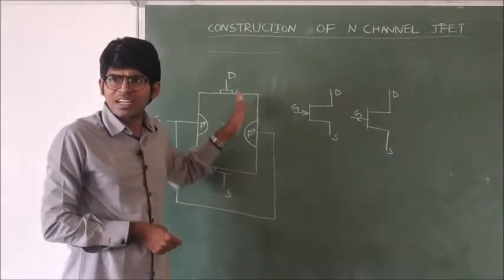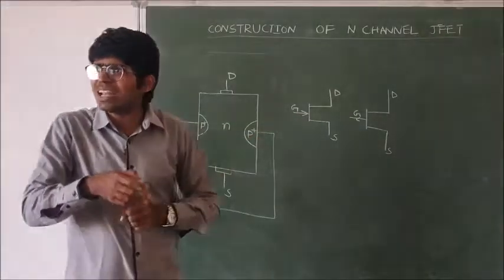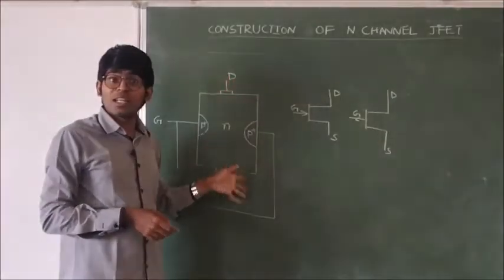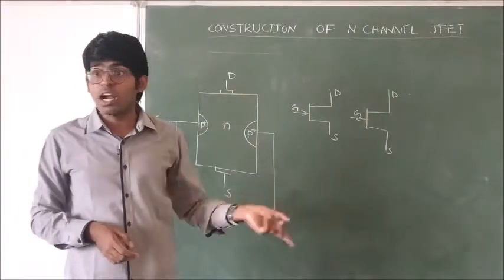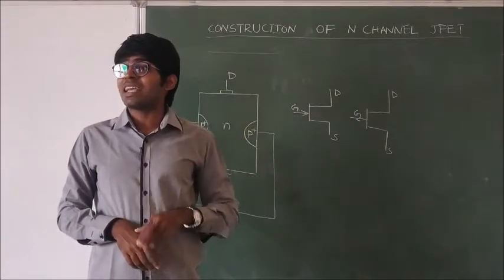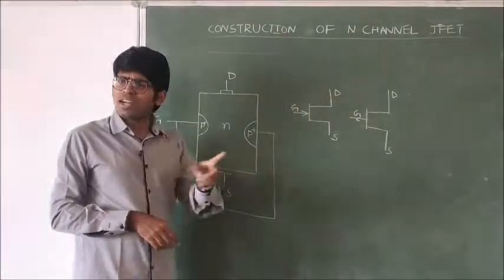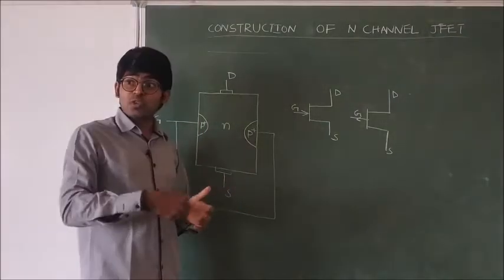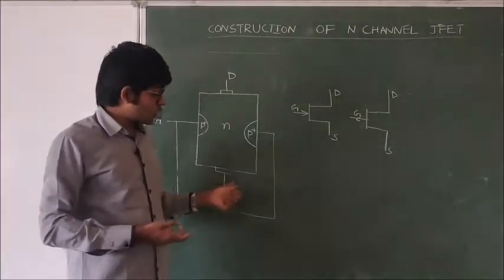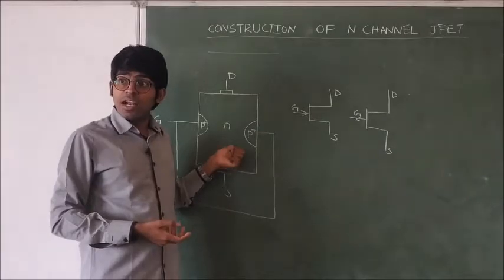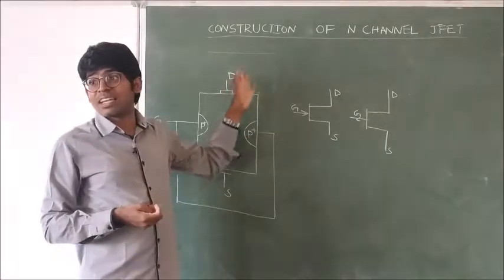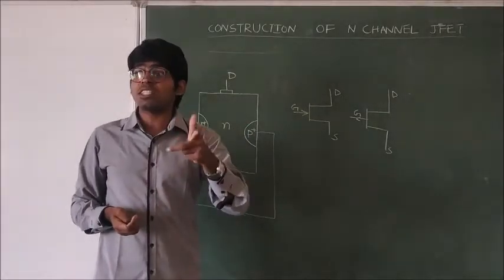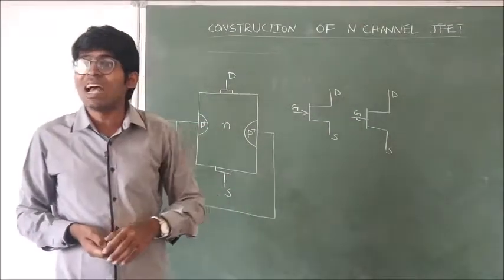In JFET, one advantage is that the source and drain terminals are interchangeable, which is not possible in the BJT where emitter and collector terminals cannot be interchangeable. The similarity between BJT and JFET: emitter corresponds to source (majority carriers entering), collector corresponds to drain (majority carriers leaving), and base corresponds to gate. Source and drain terminals can be interchangeable at low frequencies, but not at high frequencies.